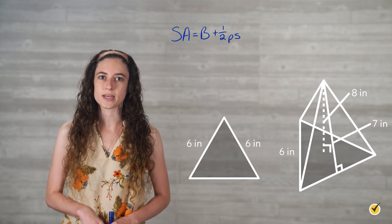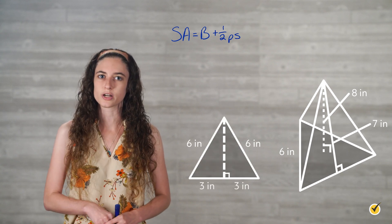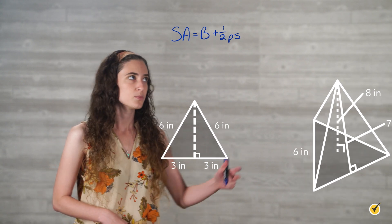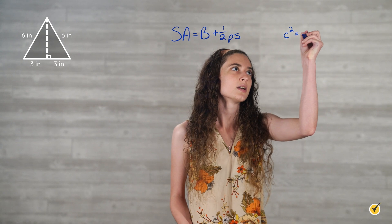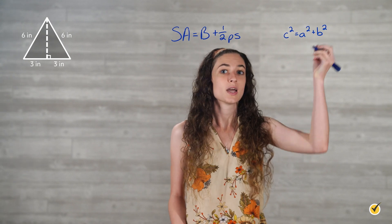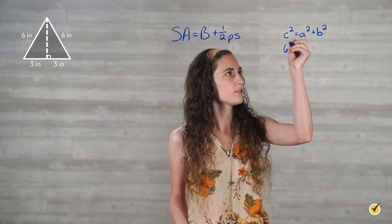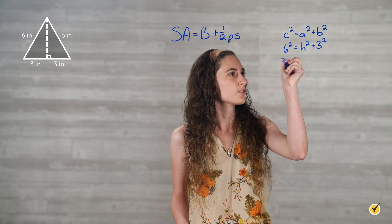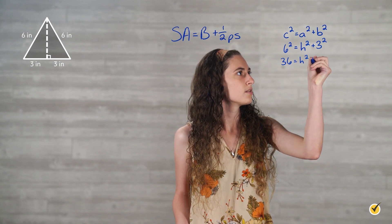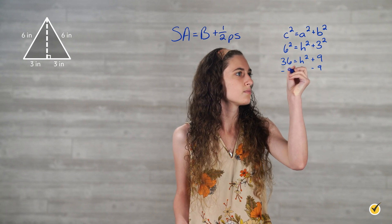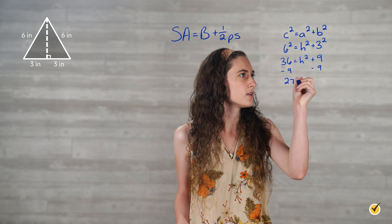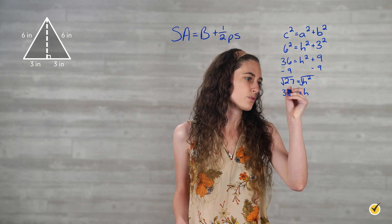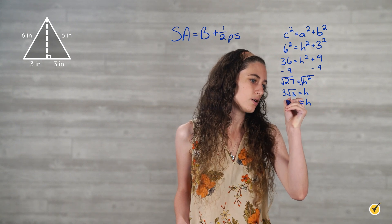We will draw a perpendicular line to the base, which is the height of the triangular base, and it divides the base of the triangle into two equal parts. Since the triangle is now turned into two right triangles, we can use the Pythagorean theorem to find the height. The Pythagorean theorem is c squared equals a squared plus b squared. Looking at our triangle: 6 squared equals h squared plus 3 squared, so 36 equals h squared plus 9. Subtracting 9 from both sides gives us 27 equals h squared. Taking the square root of both sides gives us h equals 3 root 3, or h is approximately 5.2.